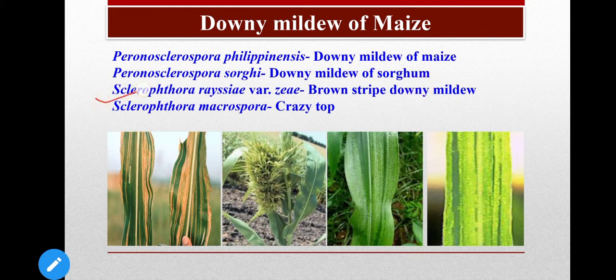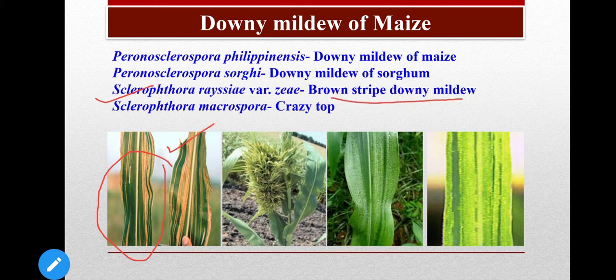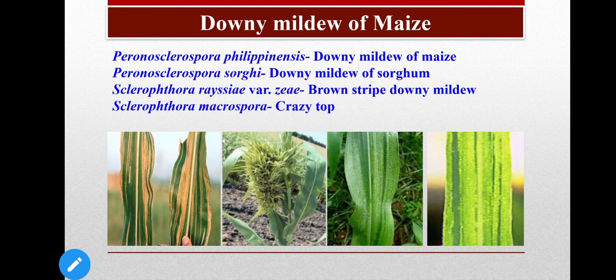The third is Sclerophthora rayssiae, causing Brown Strip Downy Mildew of maize. In the early stage of infection, leaves show narrow chlorotic and yellowish strips of 3 to 7 mm width, which later become brownish in color — that is why it is called Brown Strip Downy Mildew. The fourth pathogen is Sclerophthora macrospora, causing Crazy Top, where the leaves below the tassel proliferate, resulting in a bushy appearance at the top of the plant.